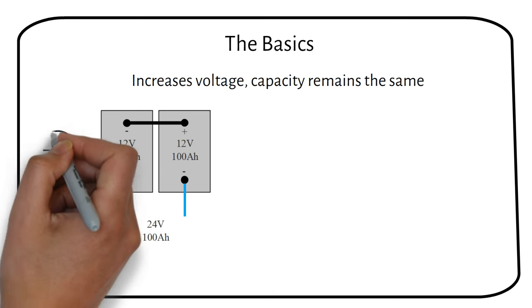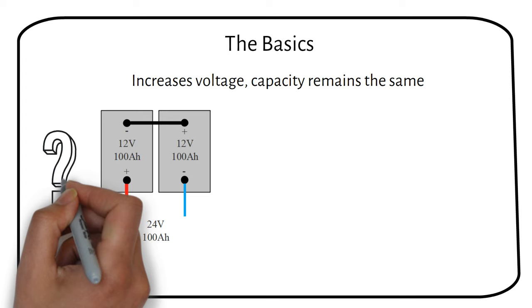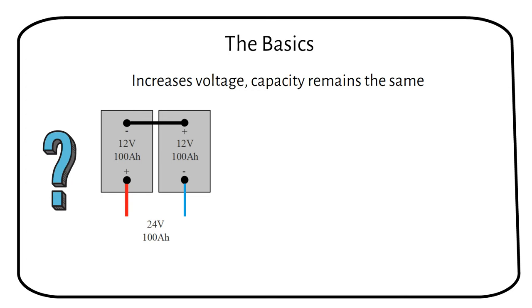I recently got a question: Does the power of the battery stay the same in series and parallel wiring? Let's see. If we calculate the total power of this battery, we get 24 volts times 100 amp hours equals 2400 watt hours.